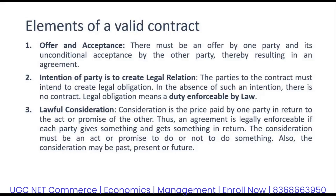So in today's lecture, we will be going through the different elements of a valid contract, starting with the very first element, which is offer and acceptance. When we talk about any contract, there needs to be an offer made by one party and the acceptance of the same offer by the other party — then only there can be a valid contract.